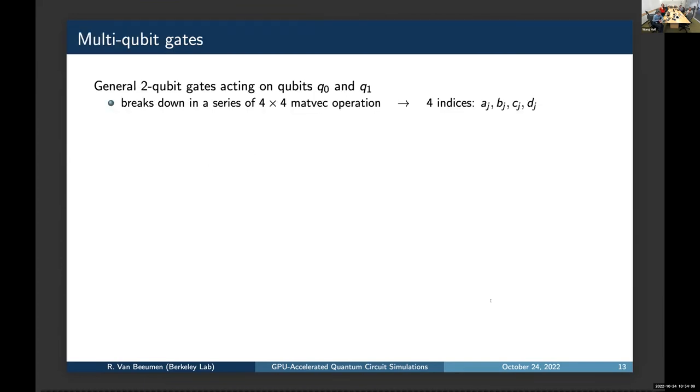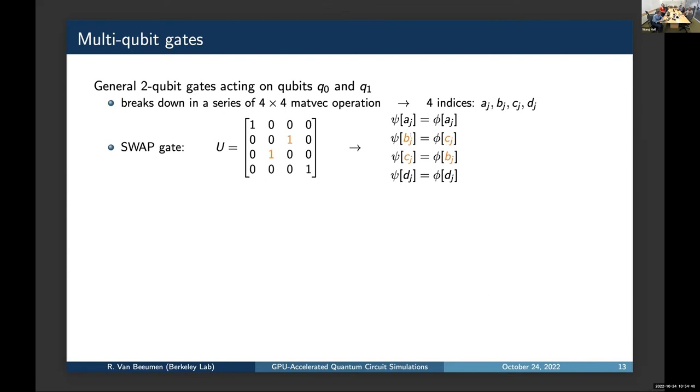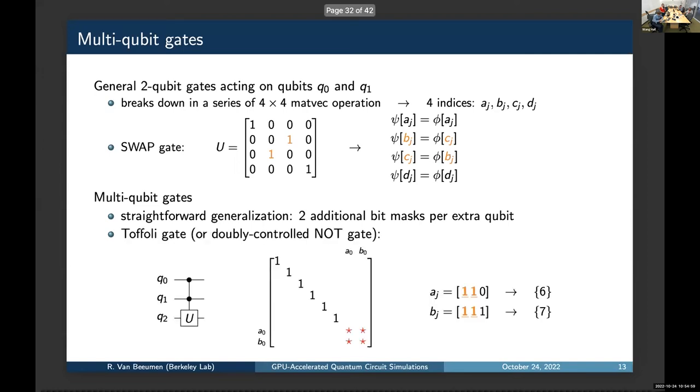So, these techniques can be generalized to multi-qubit gates. For a general two-qubit gate acting on qubits q0 and q1, the state vector simulation breaks down into a series of four-by-four matrix vector operations. A special case of a two-qubit gate is the swap gate, and since we have a lot of zeros here, the implementation of the operation can be also done very efficiently by swap operations. And then, for more general multi-qubit gates, the generalization is very straightforward. We only have to add two additional bit masks per extra qubit.